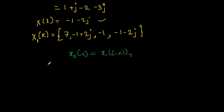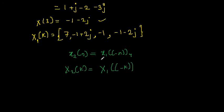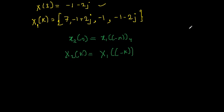Taking the DFT on both sides of x2(n) = x1((-n)), I get X2(k) = X1((-k)), which is X1 of minus k circularly. We already know X1(k), so finding X1 of minus k is straightforward using the concept of the circle again.